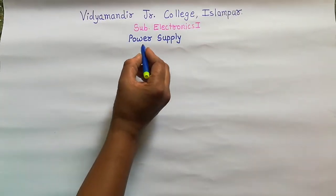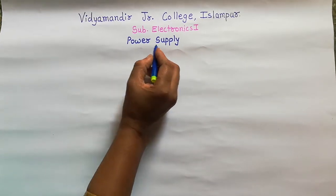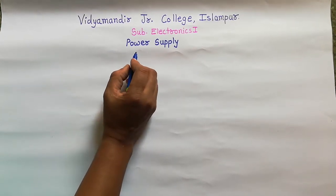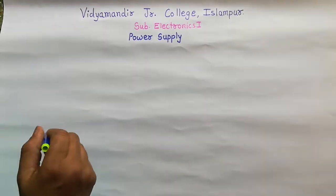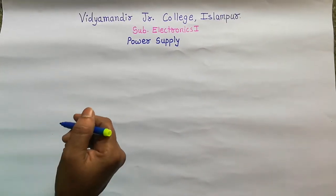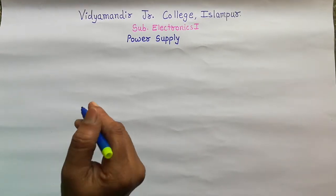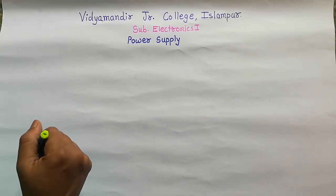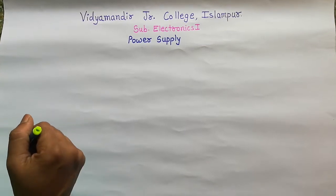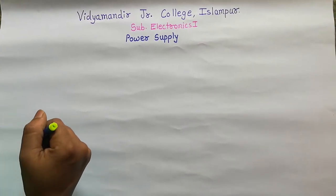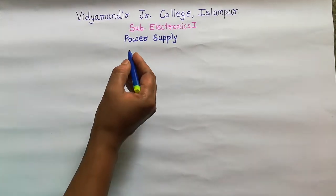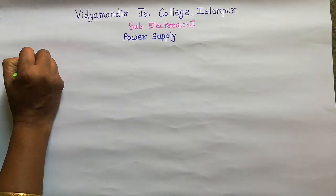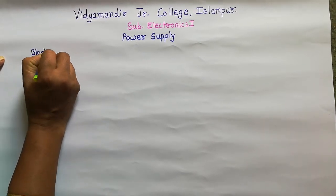Hello students, today we study the first chapter: power supply. A power supply is used to supply sufficient or required power to applications from a primary source. The primary source may be AC mains supply or battery. Most electronic equipment needs DC that is regulated and constant power, which is given by this power supply.